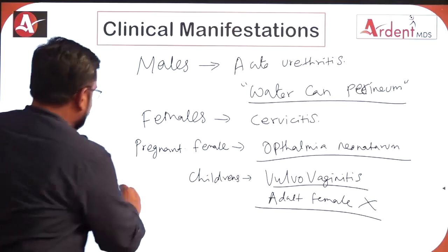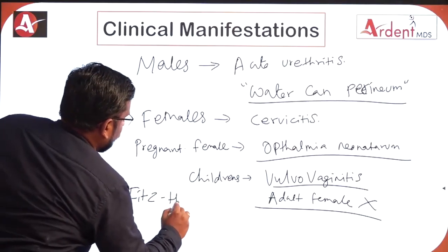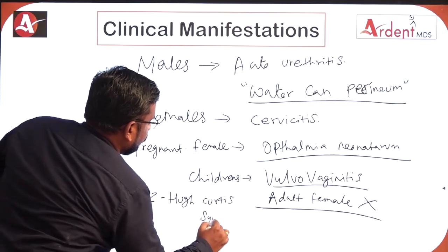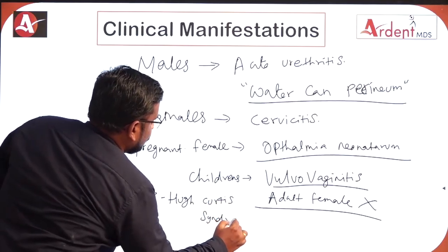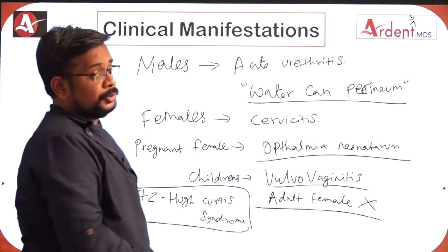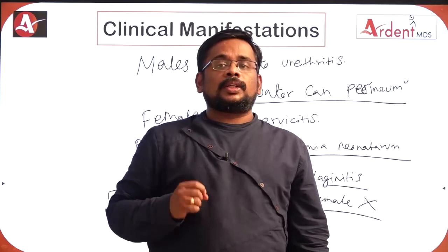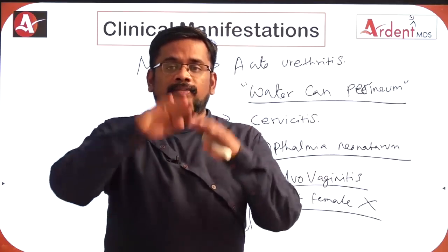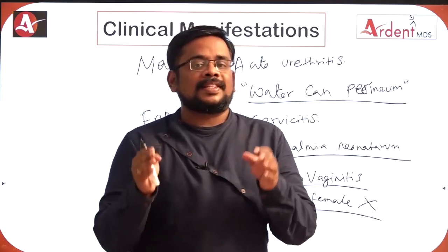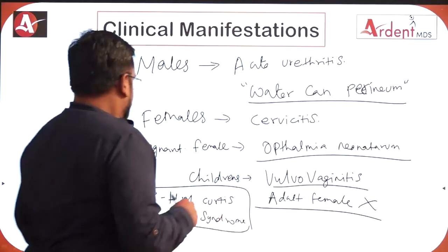One important complication of gonococci is Fitz-Hugh-Curtis syndrome. If untreated, it spreads through the peritoneal route and causes inflammation around the liver — perihepatitis — which is called Fitz-Hugh-Curtis syndrome.